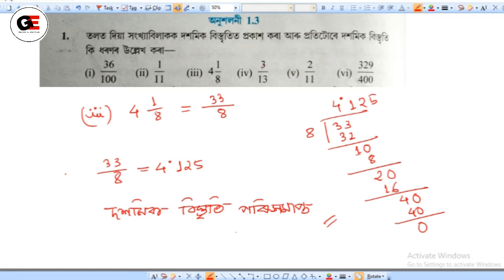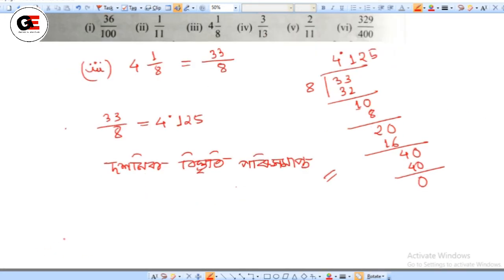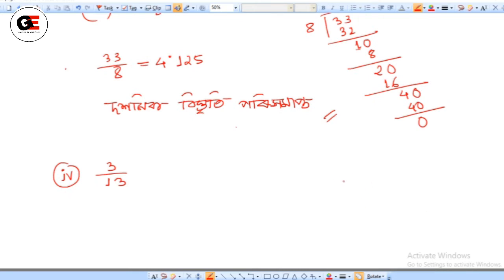Let's move to the next problem: 3 divided by 13. Then we can work through the long division. We draw 3 divided by 13, going through each step of the division 3 times.